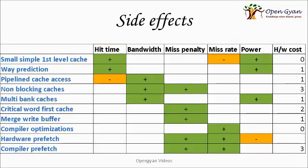All these optimization mechanisms have side effects. Evaluating hit time, bandwidth, miss penalty, miss rate, power, and hardware costs: simple first-level cache has a high miss rate but low hardware cost, with power and hit time as positives. Way prediction carries a hardware cost. Pipeline cache access affects hit time. Non-blocking caches have high hardware cost. Multi-bank and critical word first also incur hardware costs. By far the best is compiler optimization — nothing beats well-written code. Hardware prefetch carries high power consumption, and compiler prefetch has a high hardware cost.